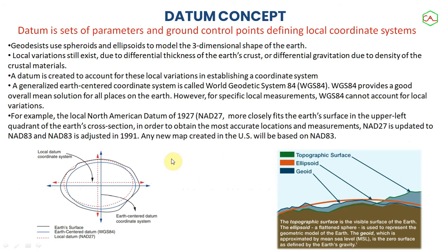Because of the distortions in projection, the concept of datums comes in. We found that it's better to develop what we call a local datum based on where you're working from. Depending on the reference, there are different kinds of reference bases for a particular location. This actually helps to control the amount of distortion you can get on your 2D planar surface. A datum is a set of parameters and ground control points defining a local coordinate system. You can see different datums in the topographic surface which differ from location to location.